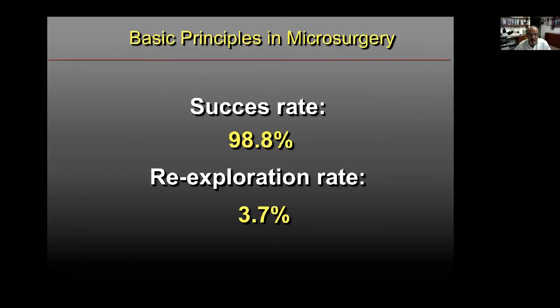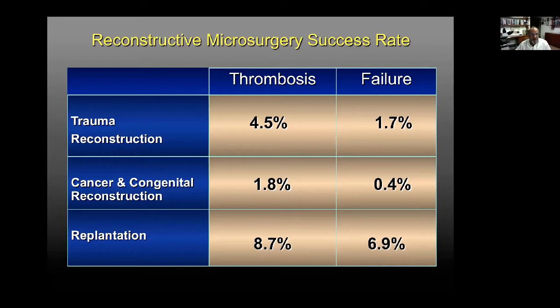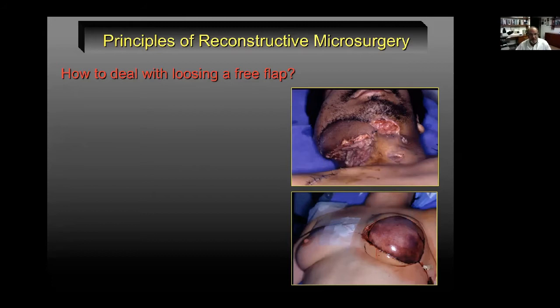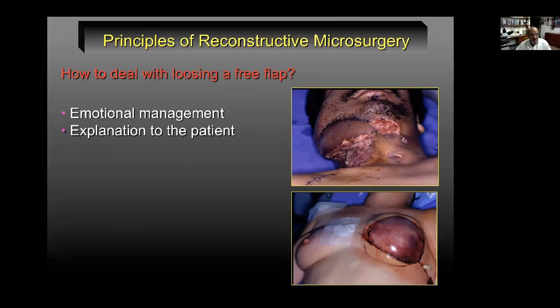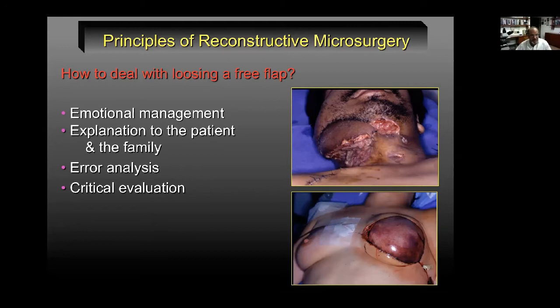The reason microsurgery is so well accepted worldwide is because the success rate is very high. Nevertheless, we always have to deal with a re-exploration rate of around four percent. The incidence of thrombosis and failure differs between trauma and cancer reconstruction, and the biggest challenge remains replantation where complication rates are still higher. Losing a free flap is something all surgeons face from time to time—it can be very emotional for the surgeon, the patient, and the family—and requires critical analysis of what went wrong to plan a new operative technique.